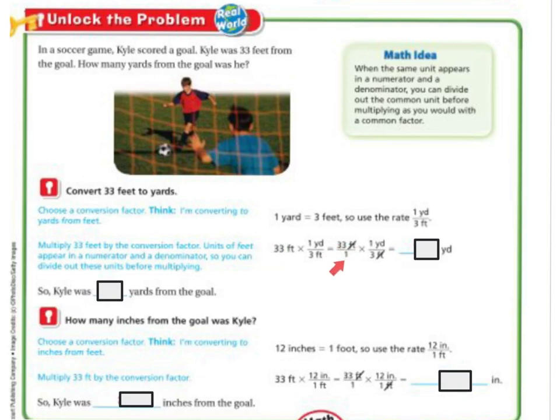So I have 33 feet over 1. And then I have times 1 over 3. So now what I'm going to do is times 33 times 1, and I get 33, and then 1 times 1. So I'm going to have 33, and this is going to be 3. So 33 divided by 3 is 11 yards. So Kyle was 11 yards from the goal.